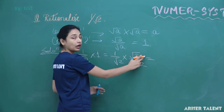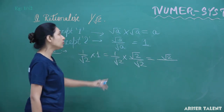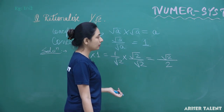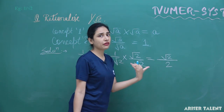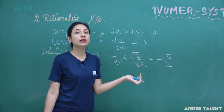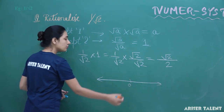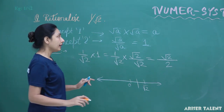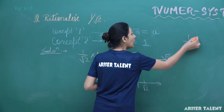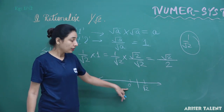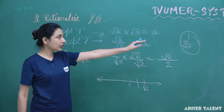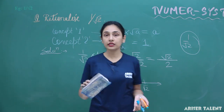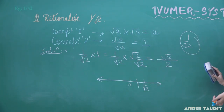Root 2 times root 2 equals 2, so the answer is root 2 over 2. Why do we want to put it in this form? Because if I ask you where root 2 over 2 lies on the number line, you can tell me: this is 2, root 2 is somewhere here, and root 2 over 2 will be half of that. But if I ask you where 1 by root 2 lies, you are not sure. So this is one reason why we rationalize the denominator — it is convenient.